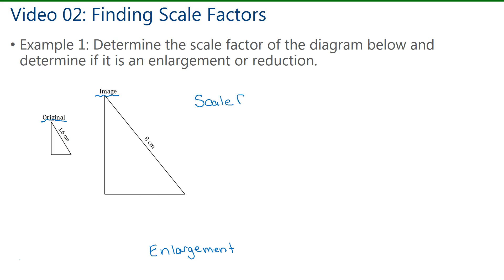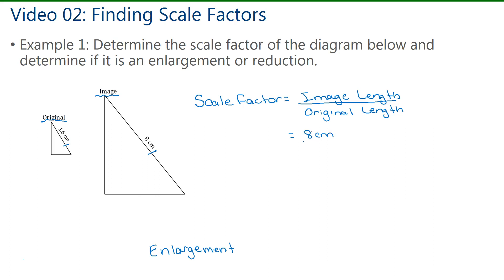We find the scale factor by writing the image length over the original length. In our diagram we're given two corresponding sides: 8 centimeters over 1.6 centimeters. Since we have the same units, we can just divide: 8 divided by 1.6 is 5. We did get a value greater than 1. Note that scale factor doesn't have units, as the centimeters cancel — so it's just 5, not 5 centimeters.